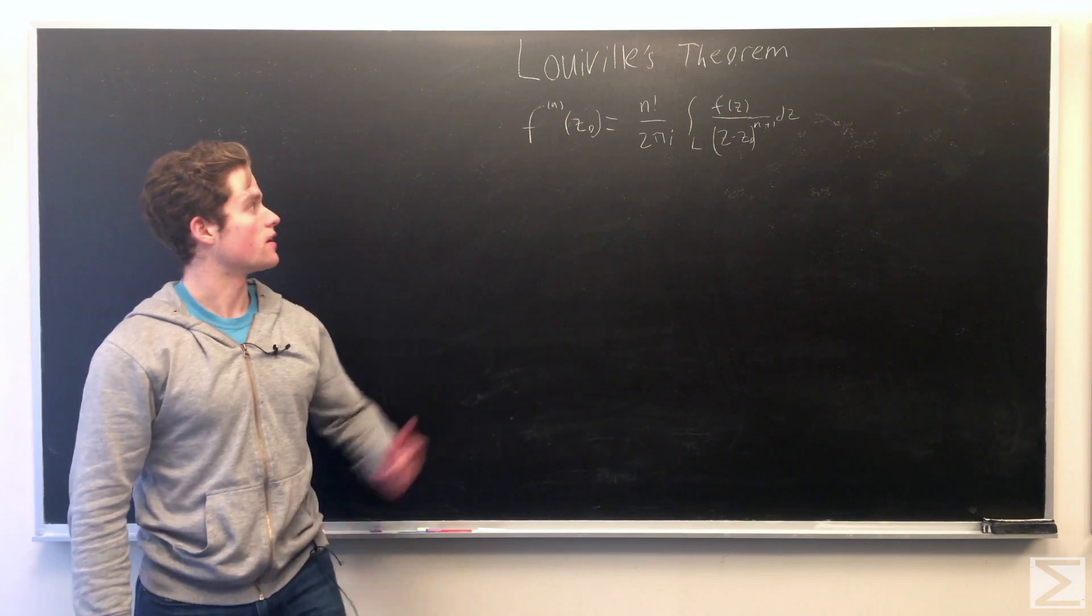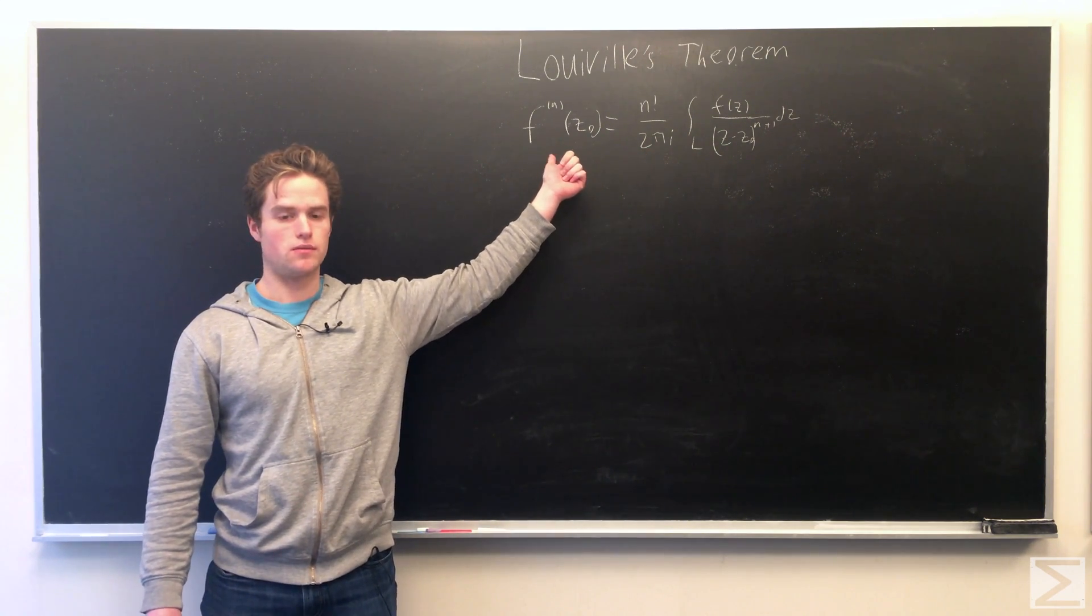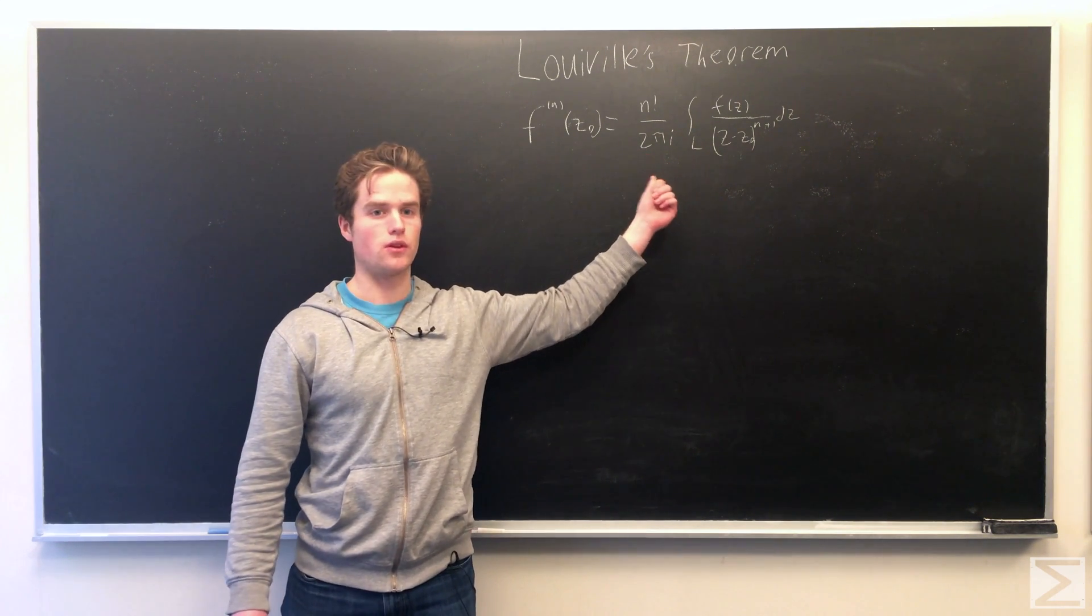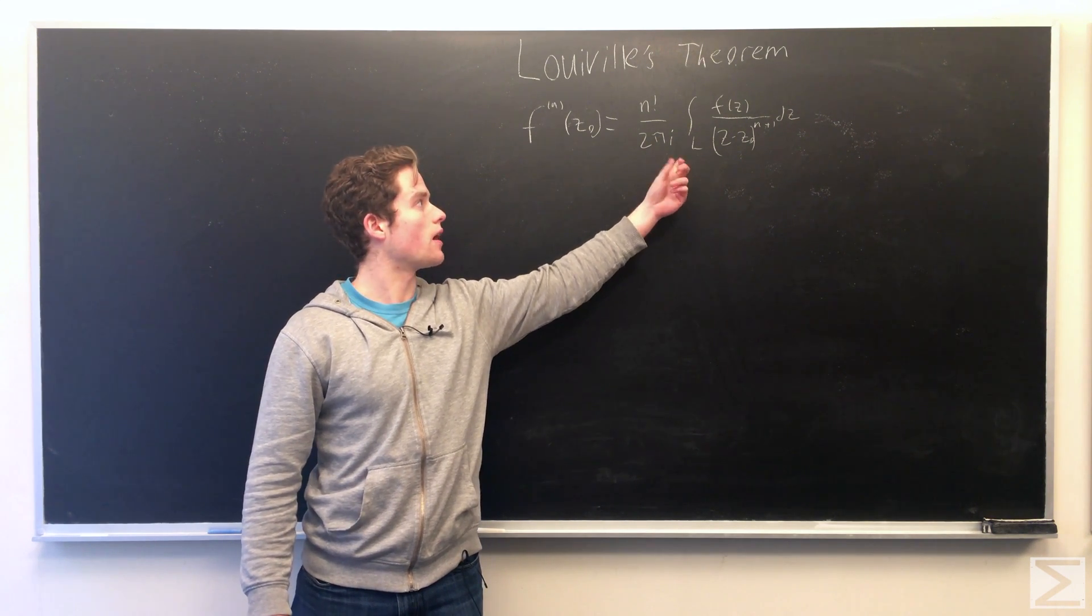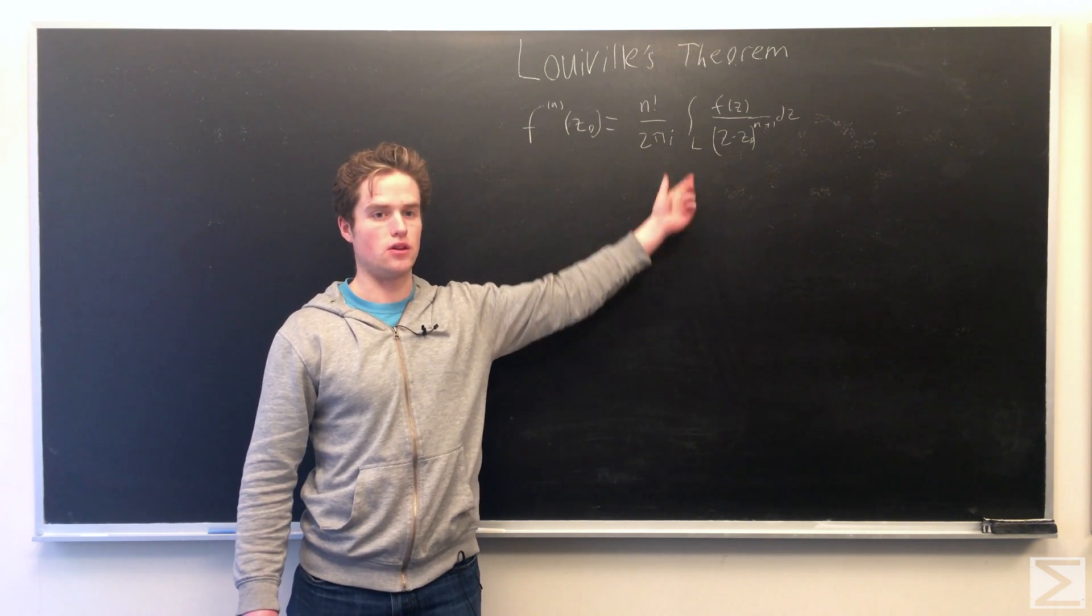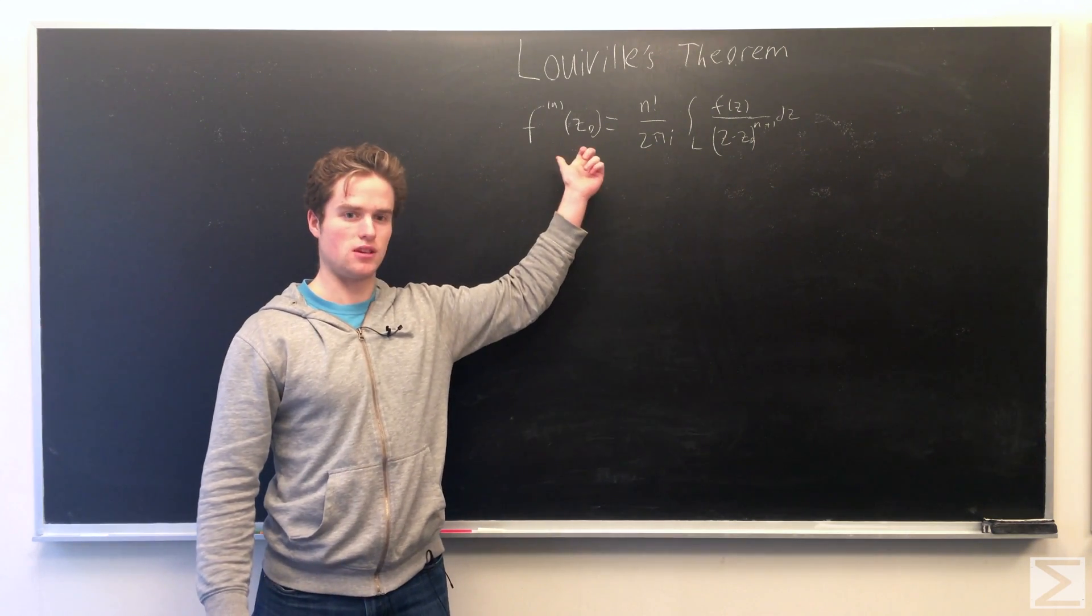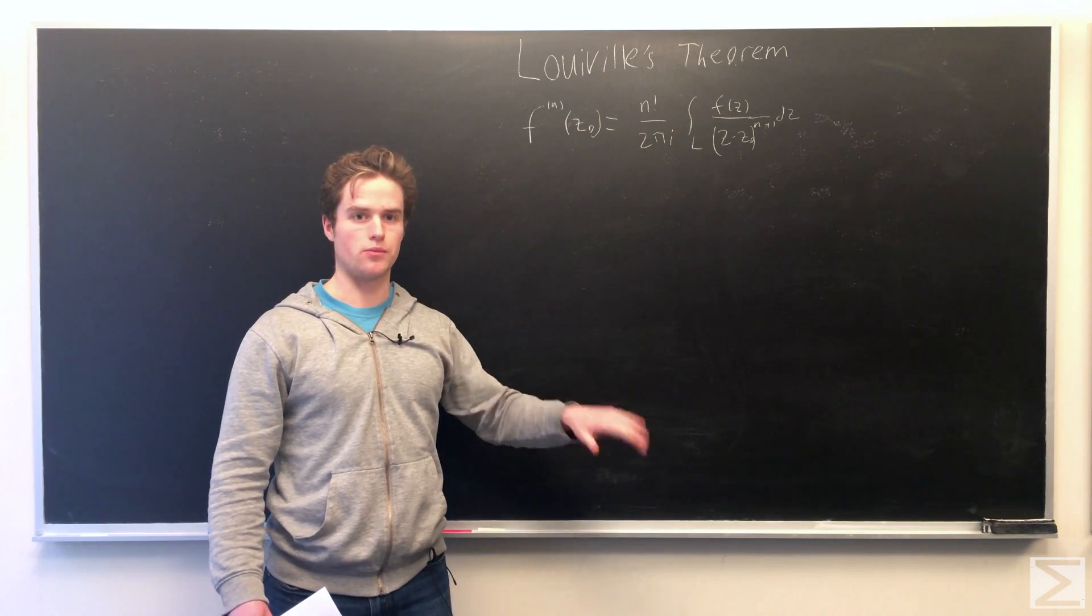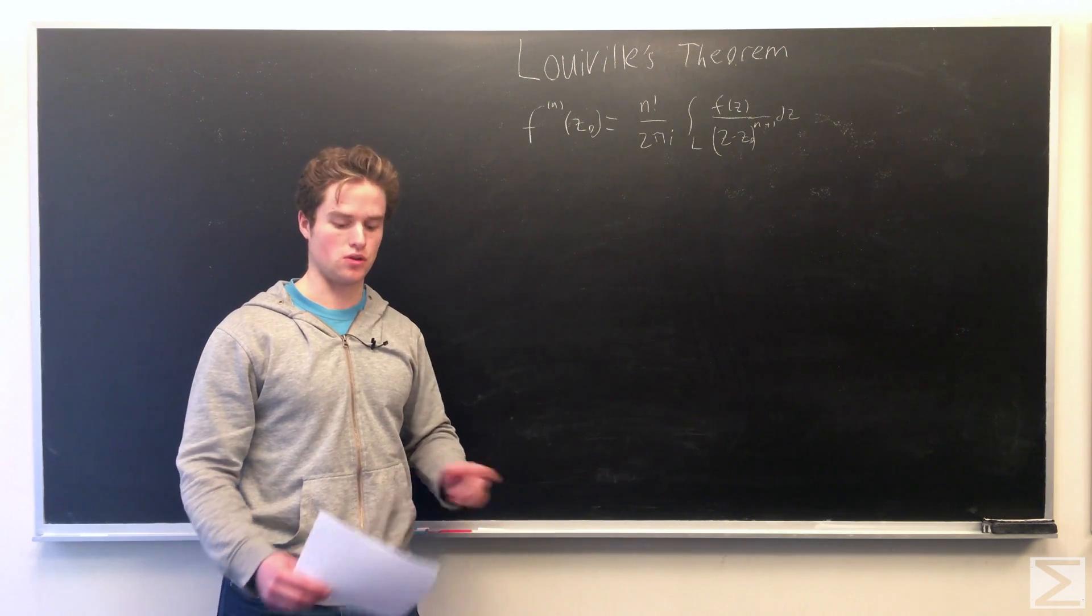So we're going to start with this equation here, that the nth derivative of a function of a complex variable at z naught equals n factorial over 2πi times the integral over a closed curve of f(z) over (z - z naught) to the n+1 dz. This is assuming f(z) is analytical in a domain and our curve is contained in the domain, its interior is contained in the domain and it's a closed rectifiable Jordan curve.